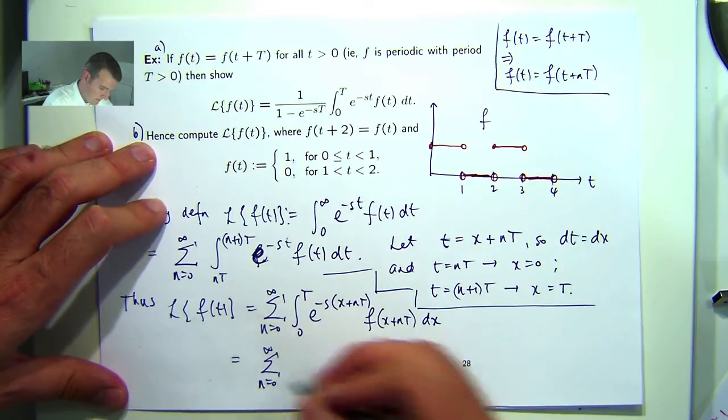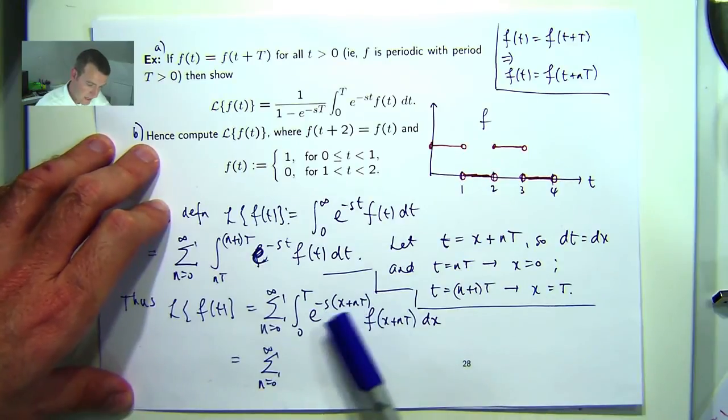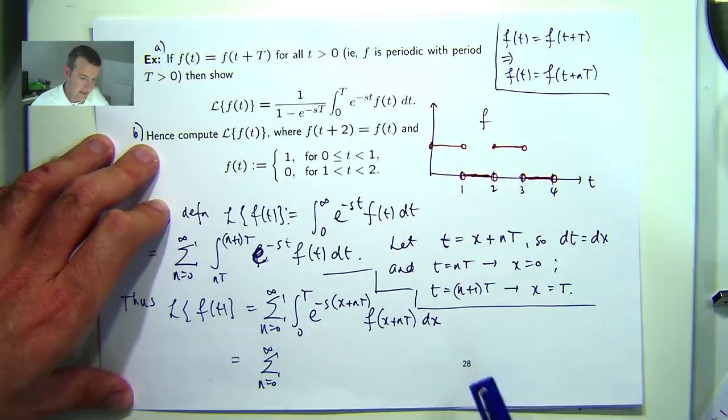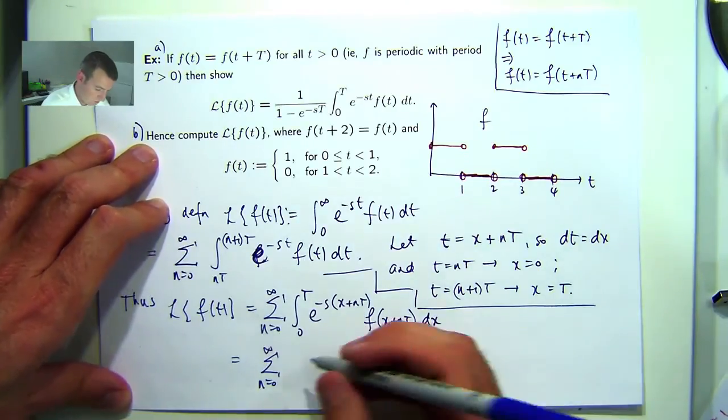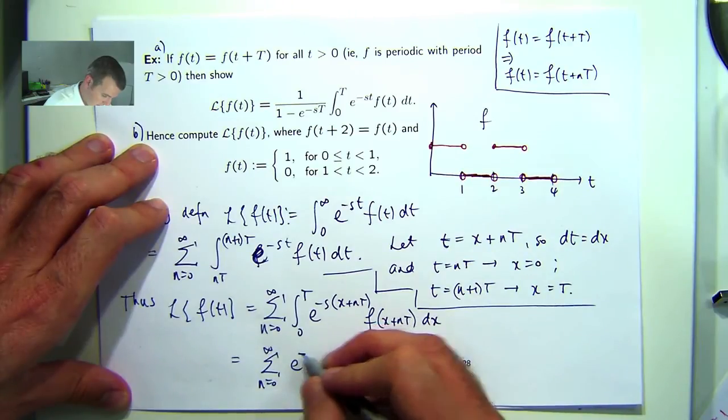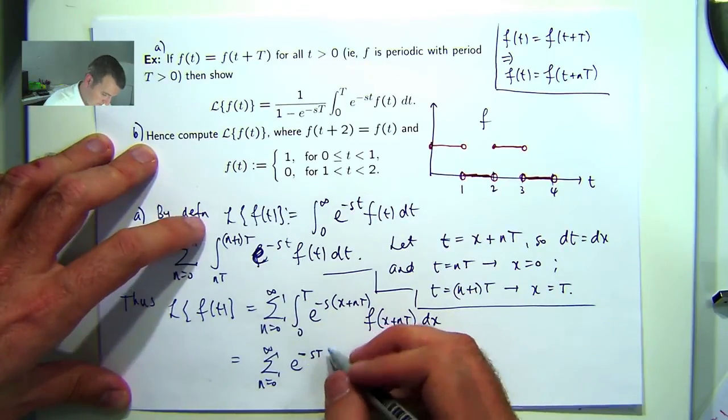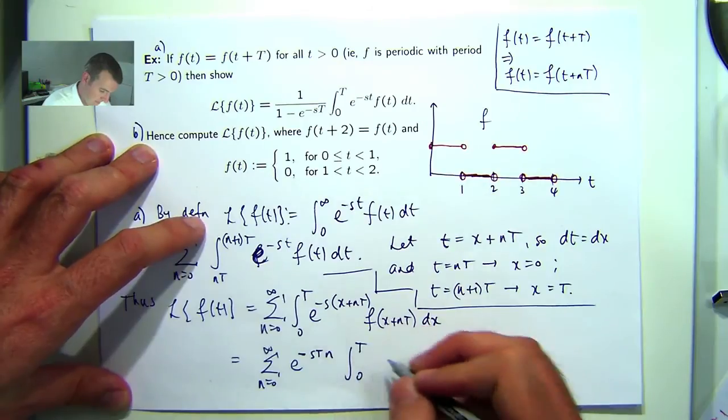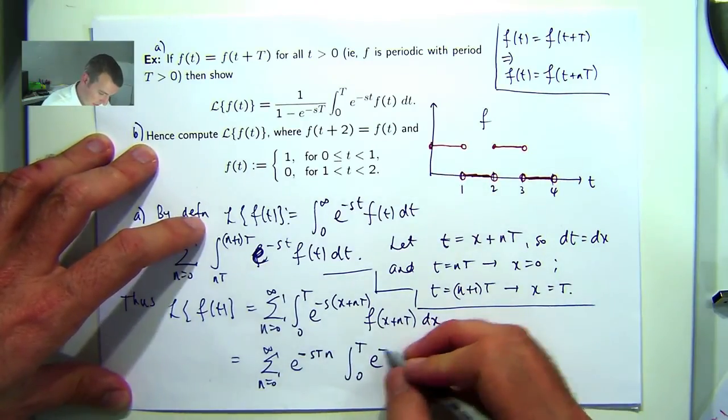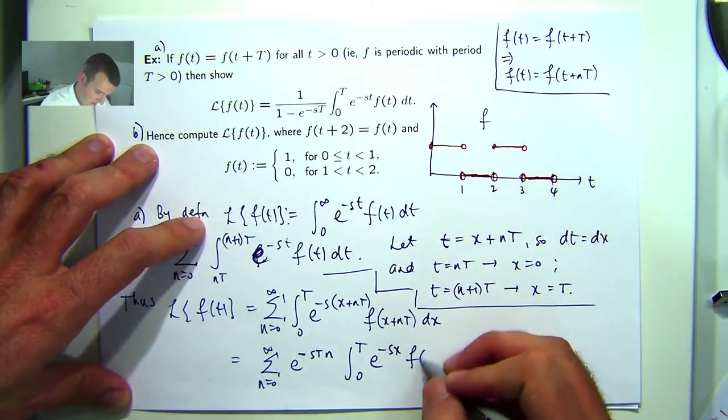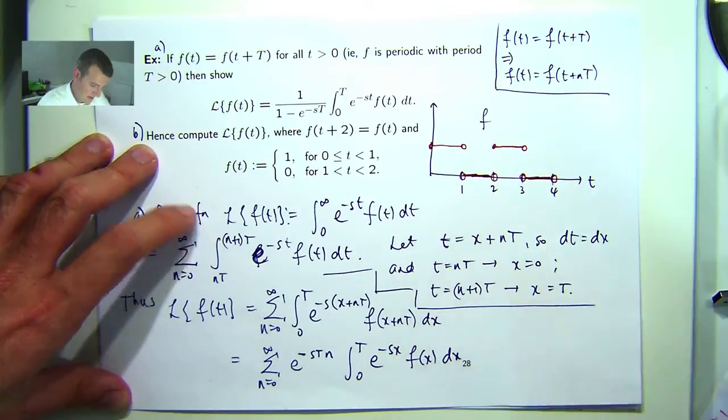Now, firstly, if I use my exponent laws, I'll get an e to the minus snT. Now, that has nothing to do with x, so I can move that outside the integral sign. I'm going to be left with e to the negative sx, and this will just go to f(x) from this part up here.